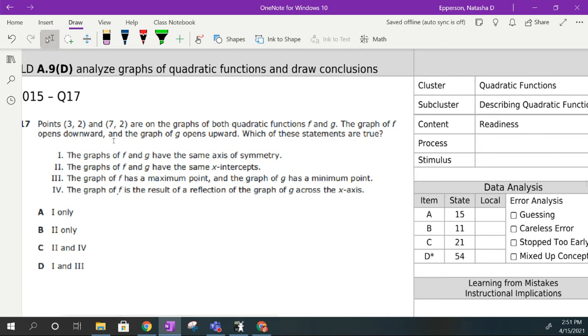Number 17. I've got these two points that are on the graph and both these quadratic functions f and g. The graph of f opens downwards. So we've got one graph. So I'm going to graph these two. So we've got one that graphs down and one that graphs up. So this is f and this is g. Which of these statements is true?